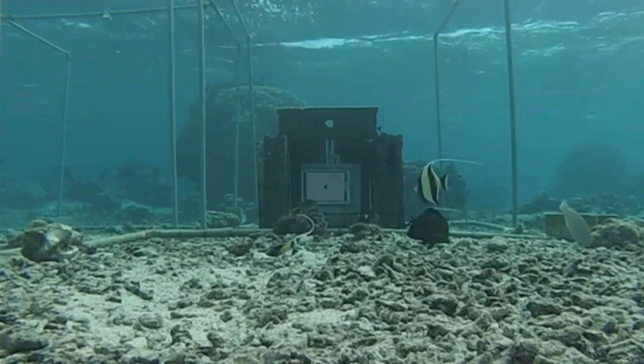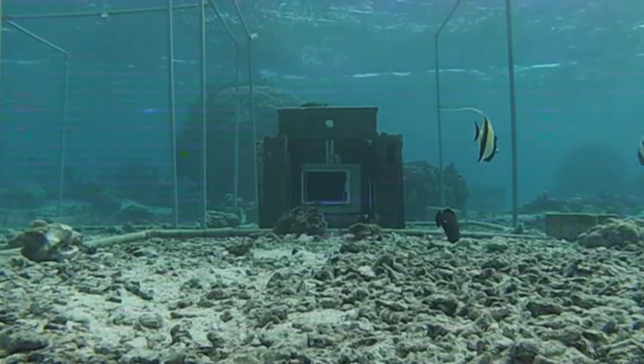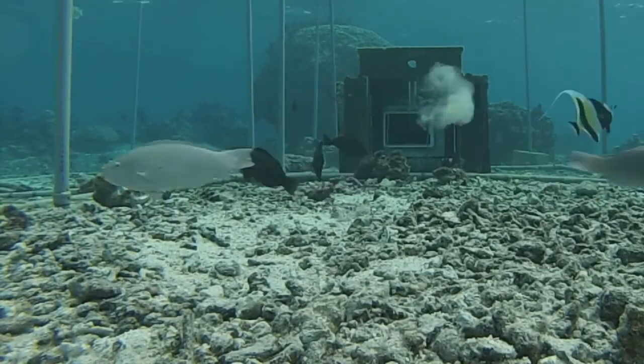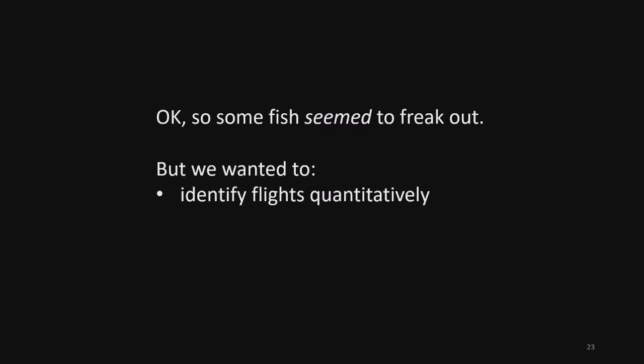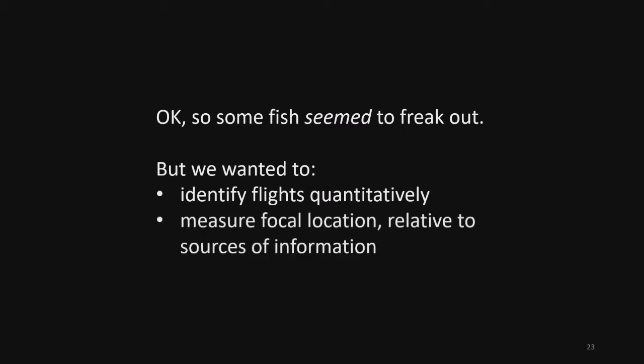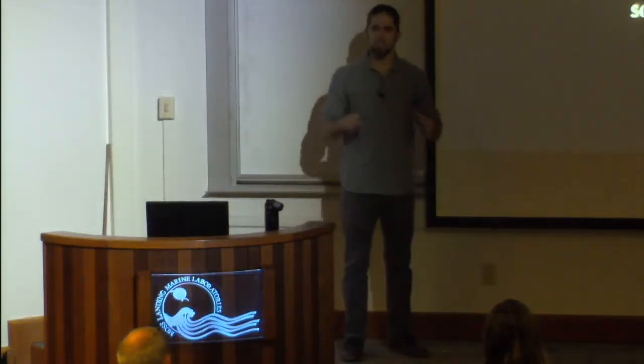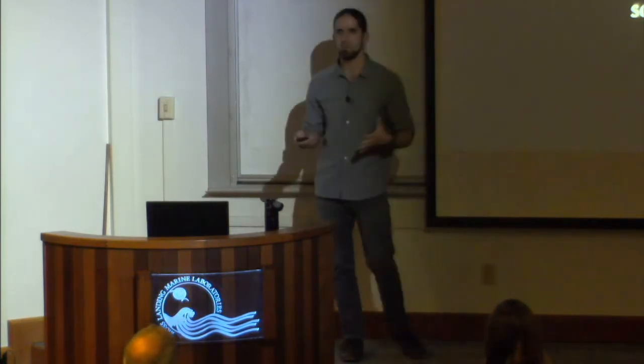This looming stimulus has been used to terrify all kinds of critters in the lab, and it hadn't been used in the field as far as we knew. So we put this on iPads underwater and placed them out in a coral reef to see what fish would do. Some of them get scared — it looks like we're seeing a fear response, and some individuals seem to react a lot more strongly than others. But we wanted to quantitatively identify flights rather than just subjectively identify whether they freaked out. We also wanted to carefully measure the location of focal individuals that are fleeing, and to understand the different sources of information around them and how they might be playing a role in these decisions.